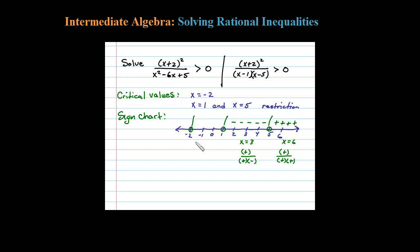for any x value in that interval. So here let's test 0—0 is always easy to test. The numerator is positive. Plugging in 0 into the denominator, 0-1 is negative, 0-5 is negative, and negative times negative is positive down there. The result will be positive.